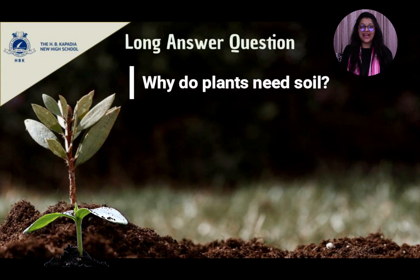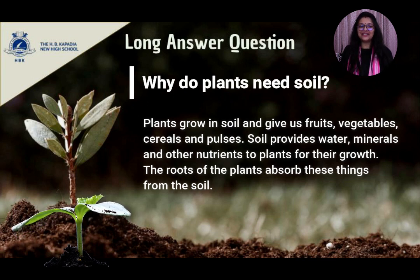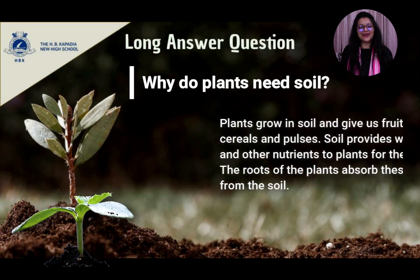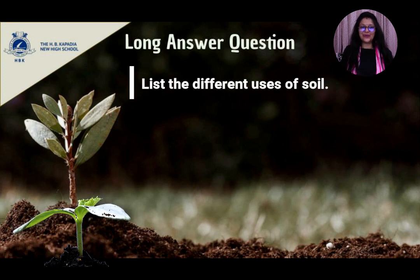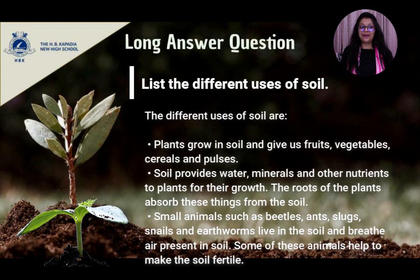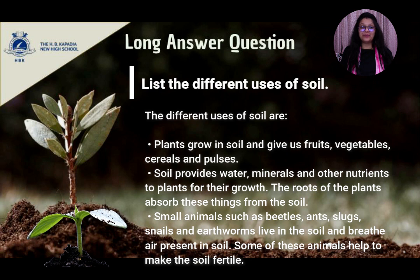Second question: why do plants need soil? Answer: plants grow in soil and give us fruits, vegetables, cereals and pulses. Soil provides water, minerals and other nutrients to plants for their growth. The roots of the plants absorb these things from the soil. Third question: list the different uses of soil. The different uses of soil are: plants grow in soil and give us fruits, vegetables, cereals and pulses. Soil provides water, minerals and other nutrients to plants for their growth, and the roots of the plants absorb these things from the soil.